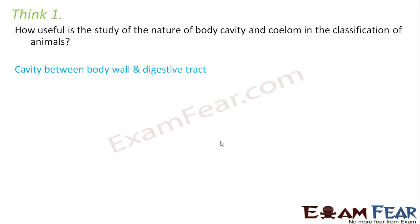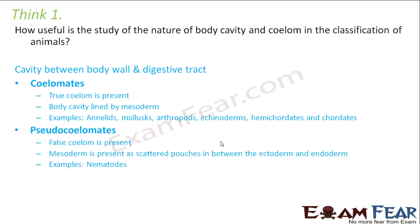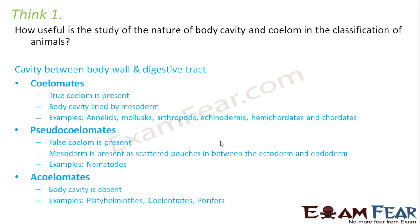There are certain animals which do not have a coelom, there are certain which have a true coelom, while there are few who do not have a true coelom but have a coelom-like structure which we can call a false coelom. Example: nematodes. The last category was acoelomates where there was no coelom present. Examples are platyhelminths, cnidarians, and porifera.